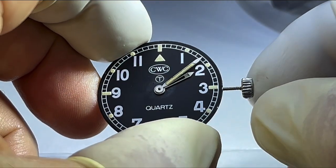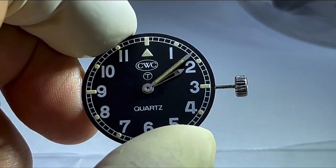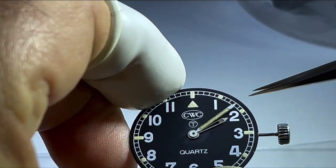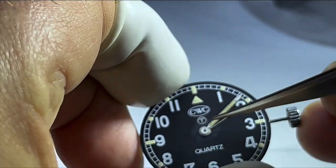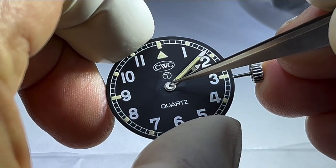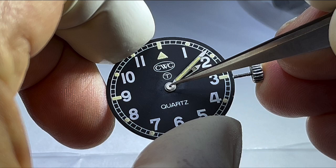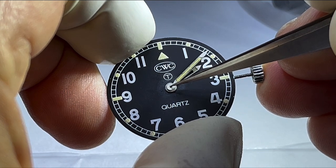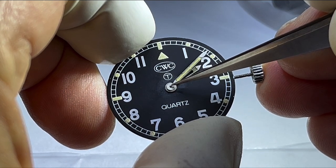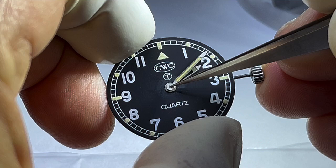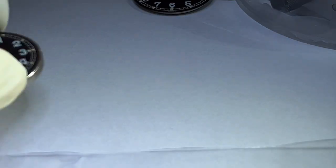The second risk of applying uneven pressure is that you actually snap the center seconds pinion that the seconds hand fits onto. In some watches, for example the Smith's W10, this is quite brittle and it can easily break. So again, even pressure on both sides will avoid bending the center posts or snapping the center seconds pinion.